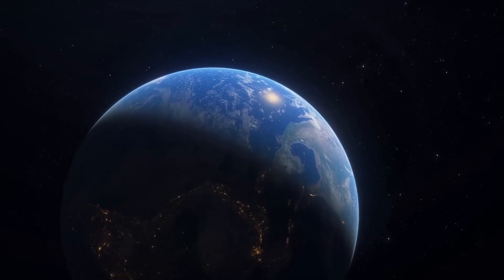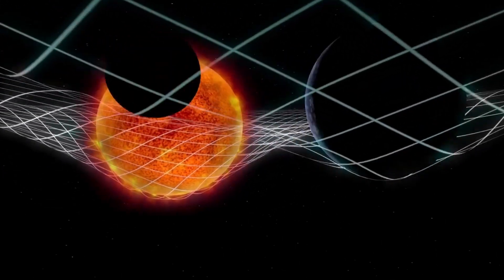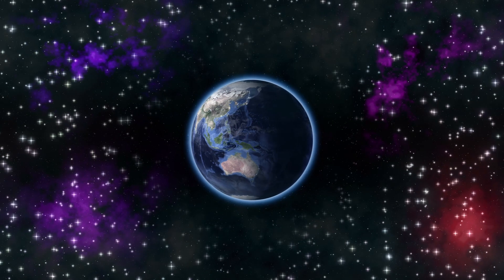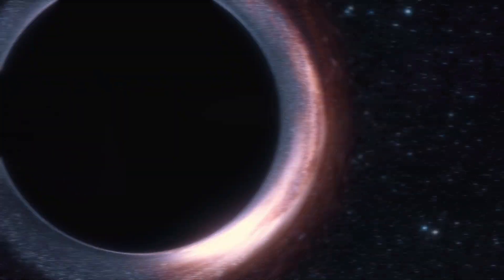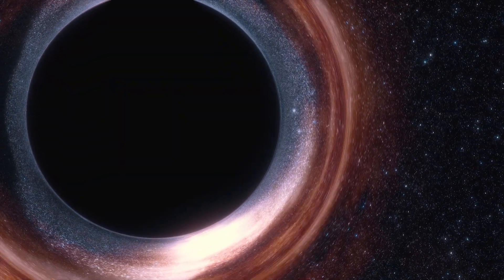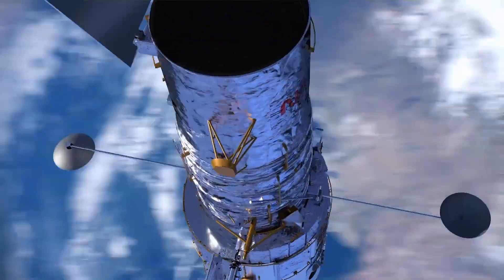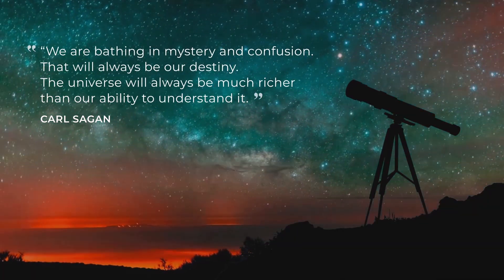However, the influence on Earth itself is expected to be minimal due to the gravitational dominance of the Sun in our solar system. Dark matter particles are believed to pass through Earth continuously, rarely interacting with ordinary matter. These interactions, if they occur, are very small and have not yet been directly observed. Nevertheless, scientists continue to study dark matter, searching for clues that could unravel its mysteries.